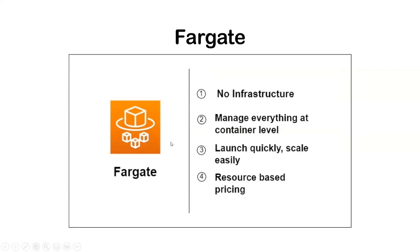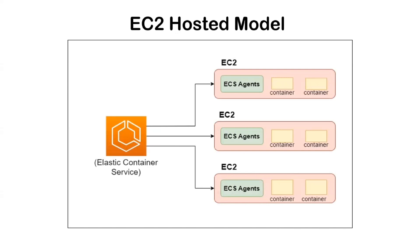With Fargate, we don't have to worry about infrastructure because everything is managed by AWS. It manages everything at the container level. It is very easy to launch, easily scalable, and the pricing is resource-based. However, compared to the EC2 hosted model, Fargate is costlier since everything is managed by AWS. Fargate is mostly used for short-running tasks, whereas the EC2 model is considered better for long-running tasks since the cluster is more predictable and also cheaper.